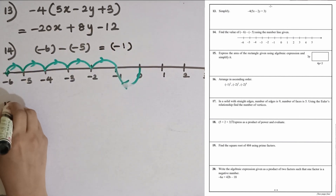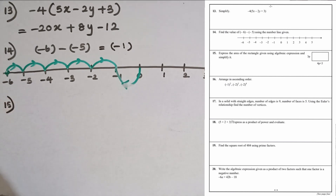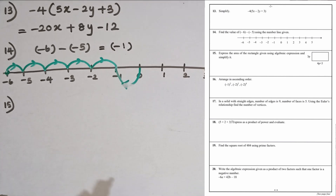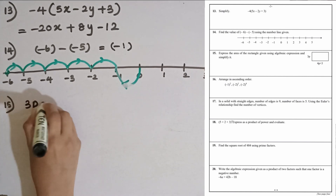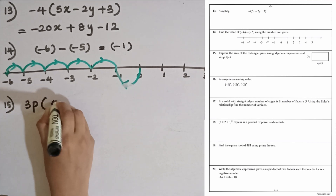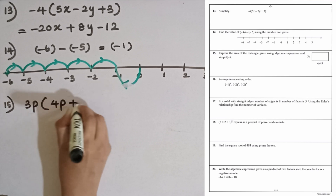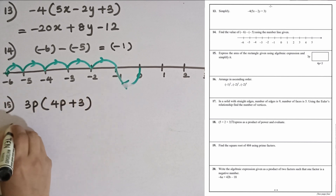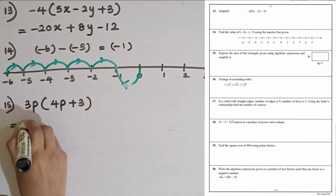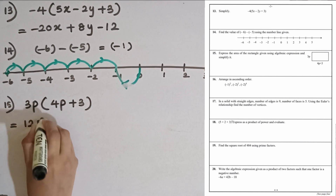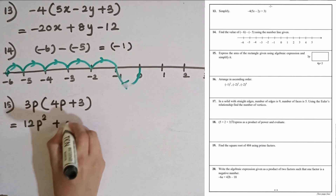Question number 15. Express the area of the rectangle using an algebraic expression and simplify it. The length is 4p plus 3 and the breadth is 3p. So 3p times (4p plus 3): removing the bracket gives 3p times 4p plus 3p times 3, which equals 12p² plus 9p.